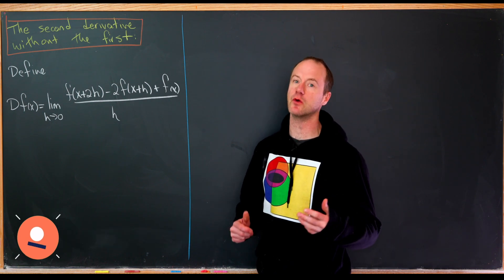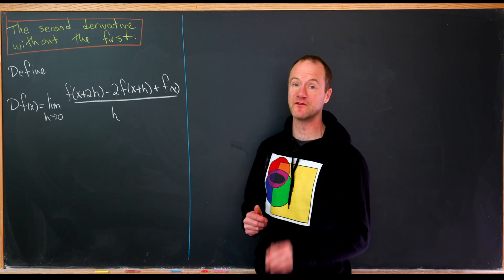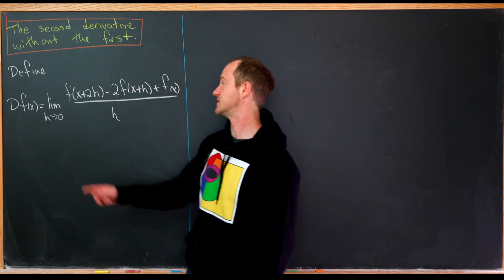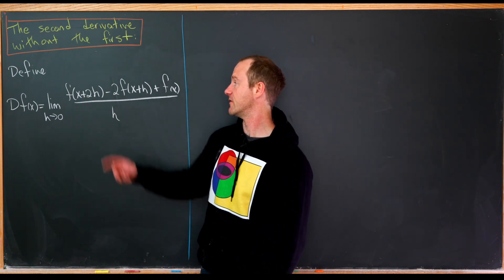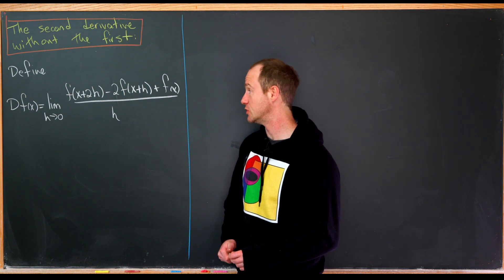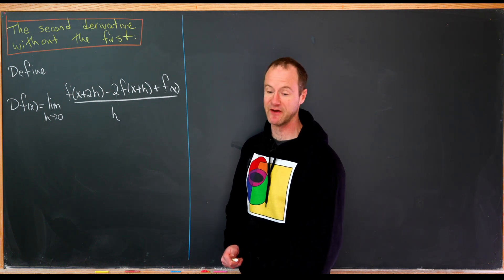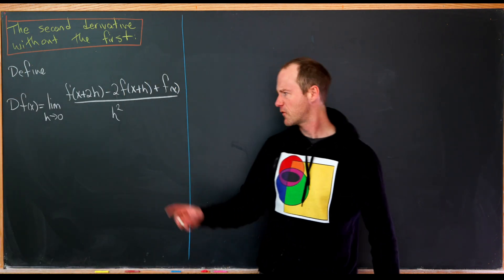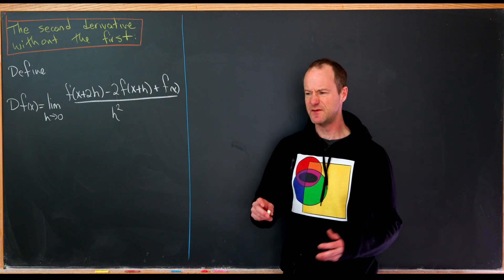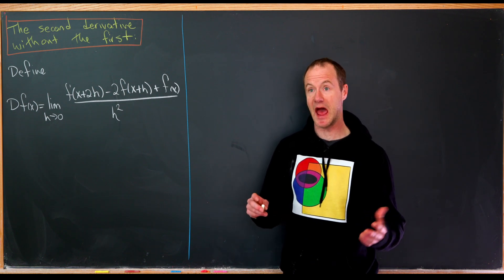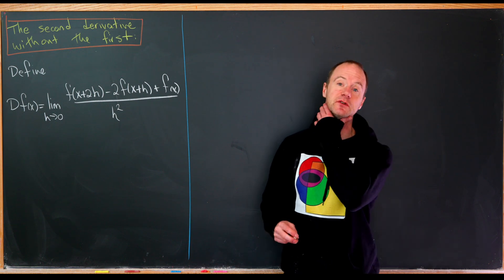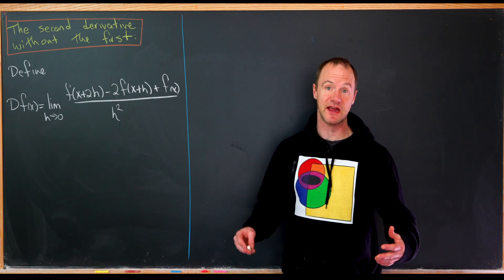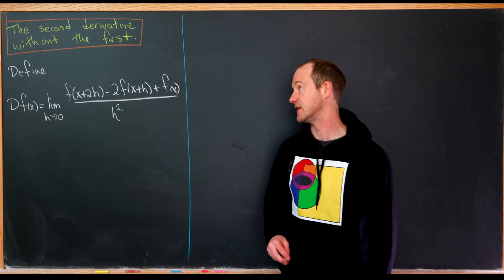Let's define an operator d so that it takes a function f(x) and gives us the limit as h goes to 0 of f(x + 2h) minus 2f(x + h) plus f(x), all over h squared — but only if this limit exists. If it doesn't, the function will not be second differentiable. Let's verify that this creates the second derivative without actually taking the first derivative.